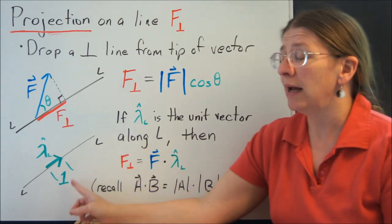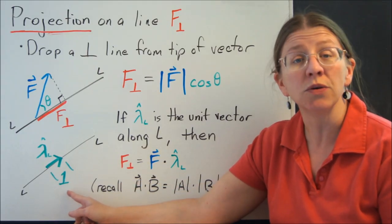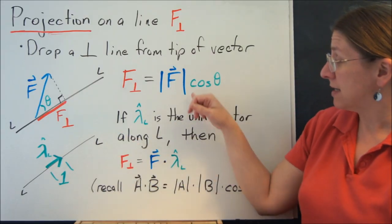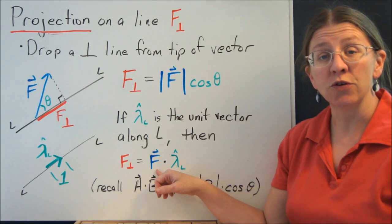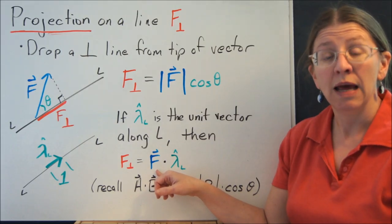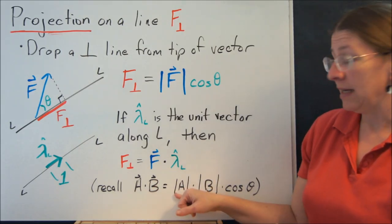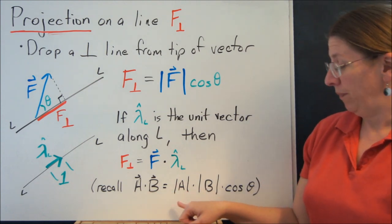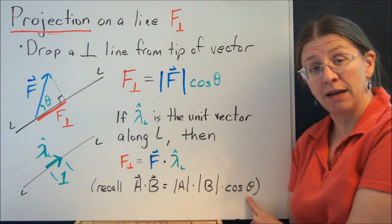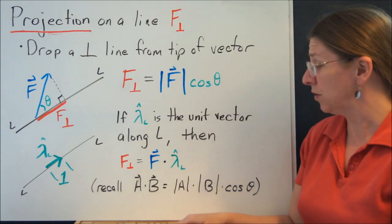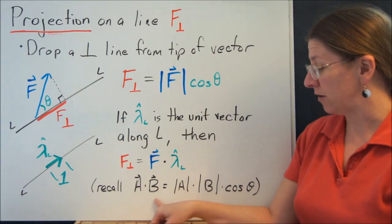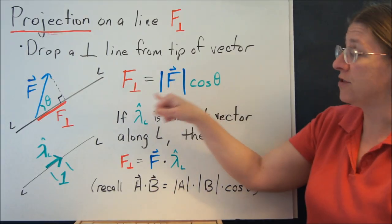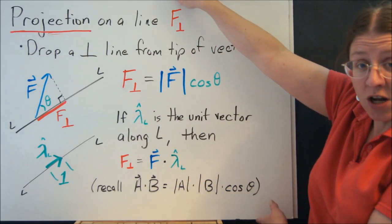Now, if you take lambda L as the unit vector along this line, that's the unit vector in the direction, then what you can say is this is actually the dot product between the vector itself and the unit vector along the line. And if you remember what the definition of a dot product is, anytime you did this in early calculus, you get A dot B is the magnitude of A times the magnitude of B times the cosine of the angle in between them. That's what we're using here, except B is a unit vector, so the magnitude of B is 1.